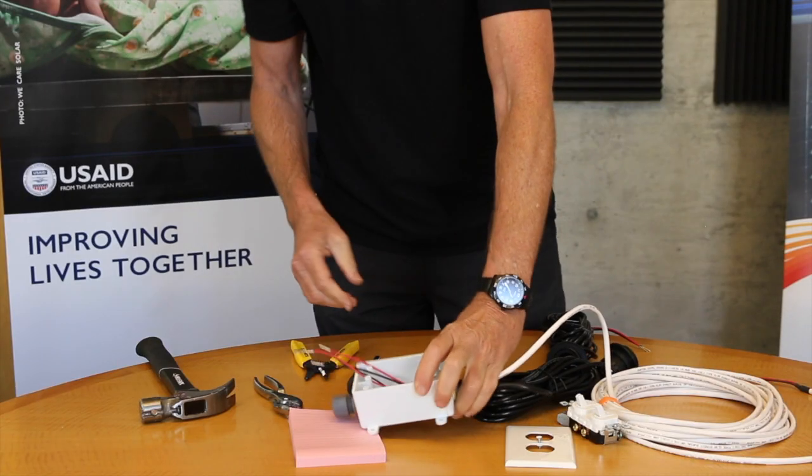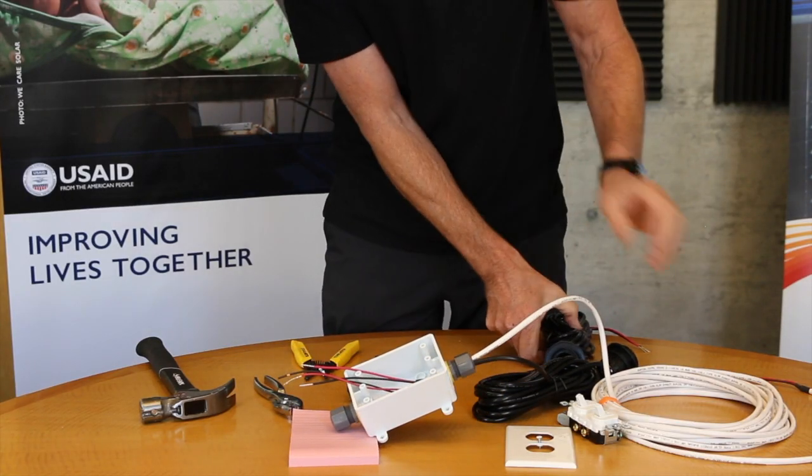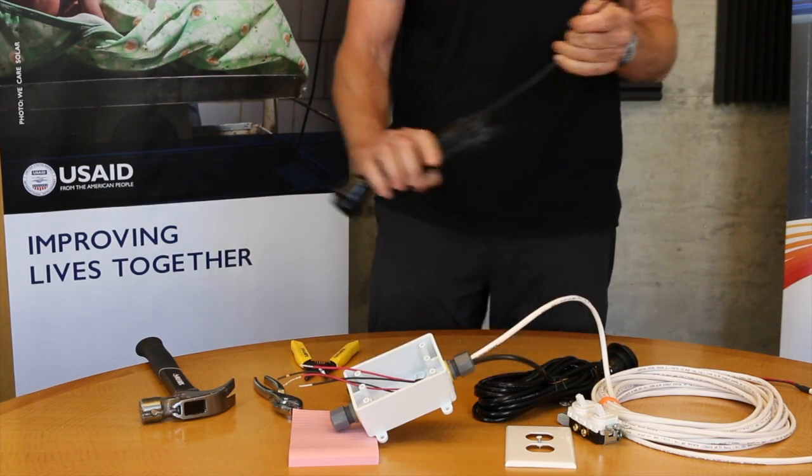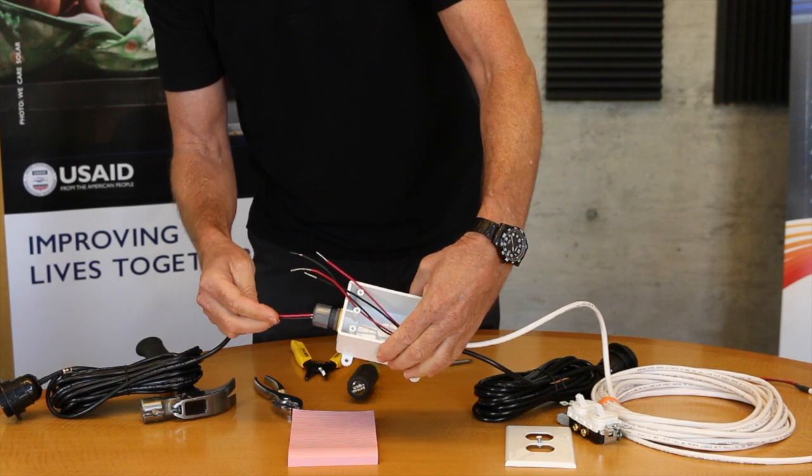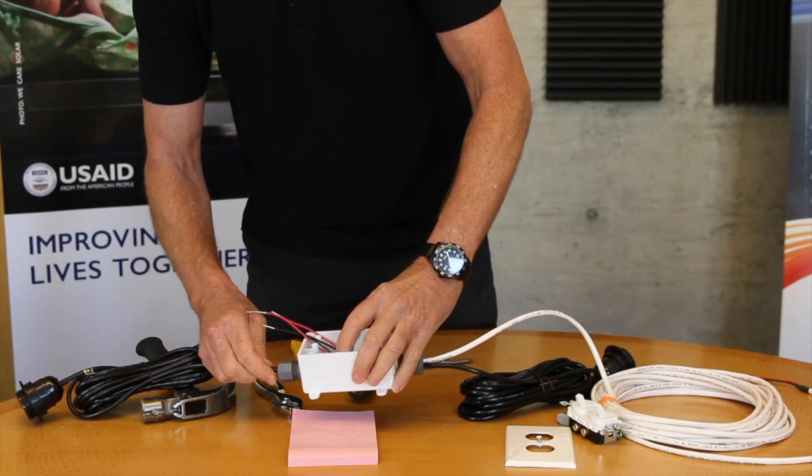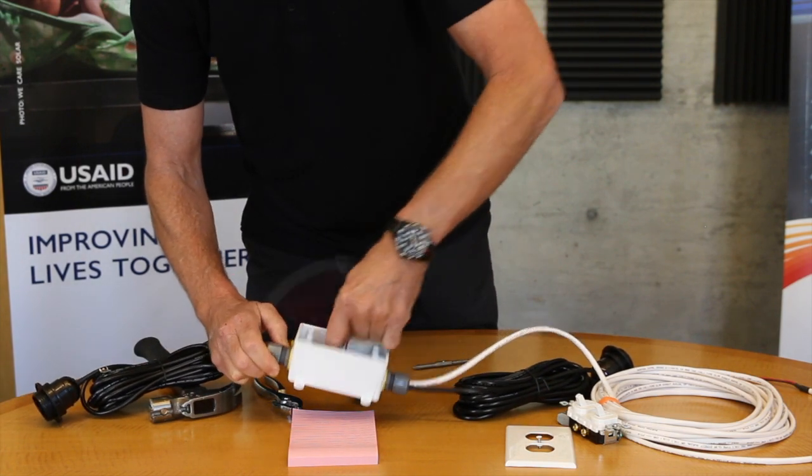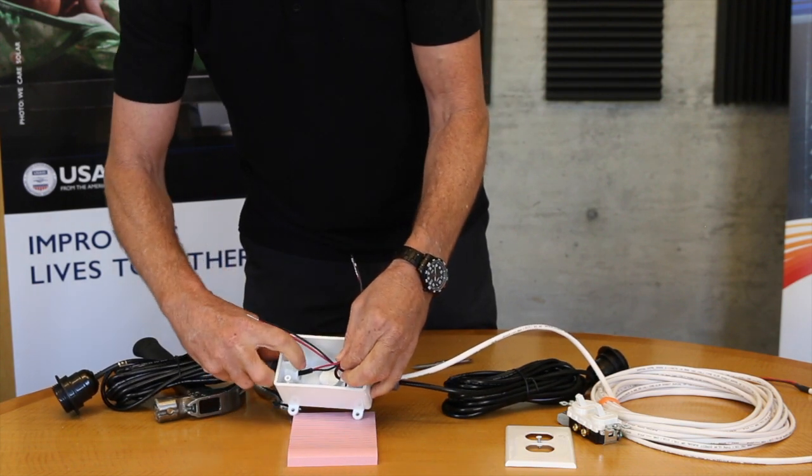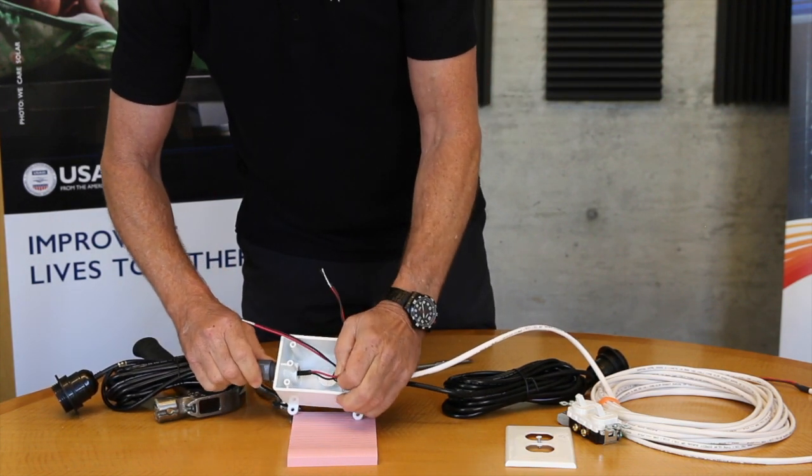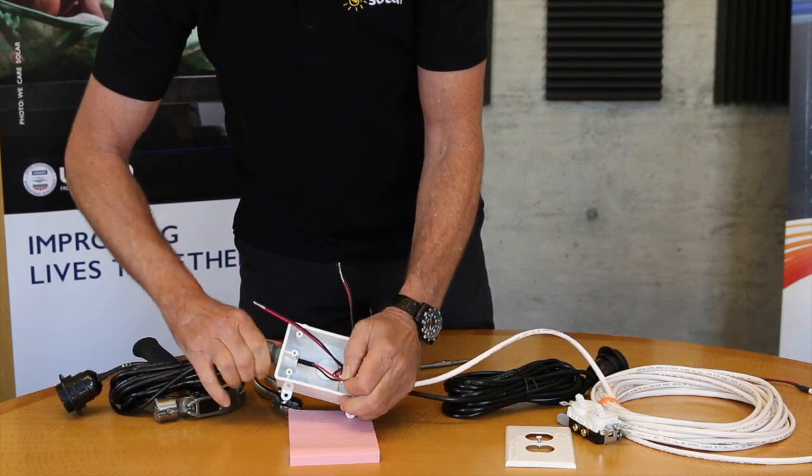Now I'm going to feed the lamp cord that's remaining through the other side of the box. And this one I don't have to take apart the cord grip. Pulling it into the box until I see the jacket on this cable. So I've got about an inch of jacket coming in. And now I tighten this cord grip.